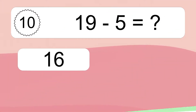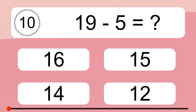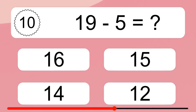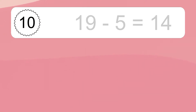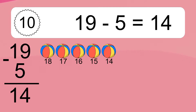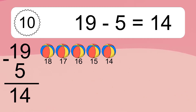19 minus 5 equals what? 19 minus 5 equals 14. Let's count it: 18, 17, 16, 15, 14.